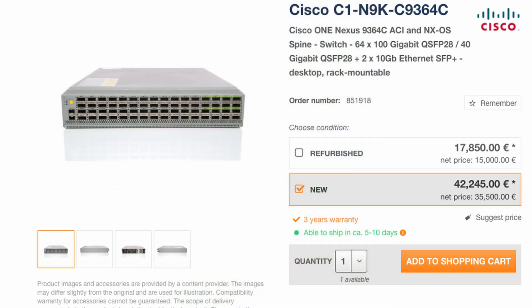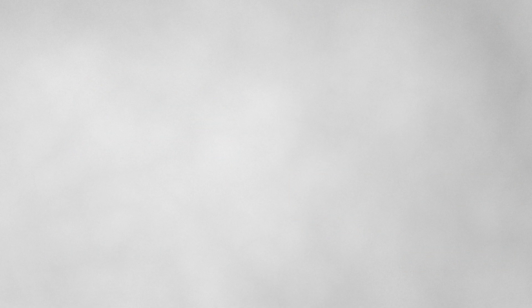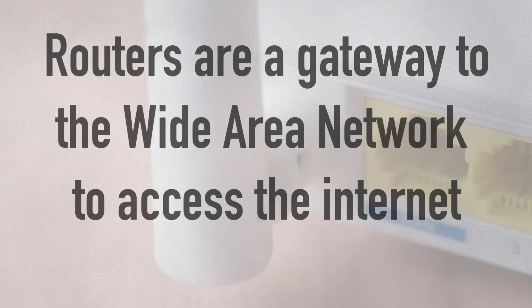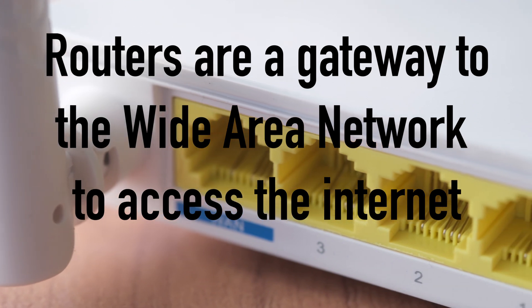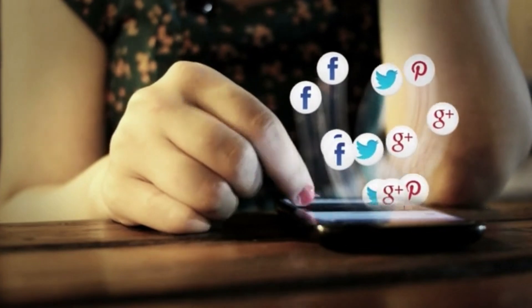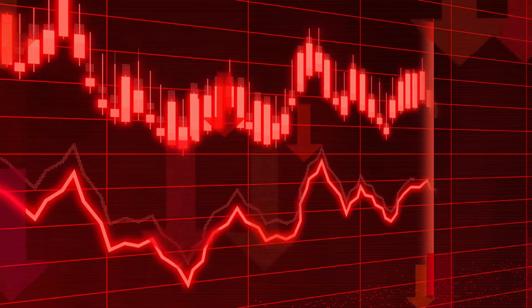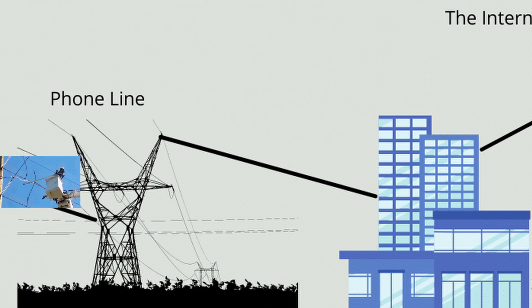The point of redundancy is to minimize any system or network downtime. Routers are a critical part of an infrastructure — they're the gateway to the wide area network to access the internet. In the connected world today, accessing resources on the internet is essential to the running of homes and businesses, so downtime is not only inconvenient and frustrating but can also be financially damaging. This is why having a single ISP line is a single point of failure.